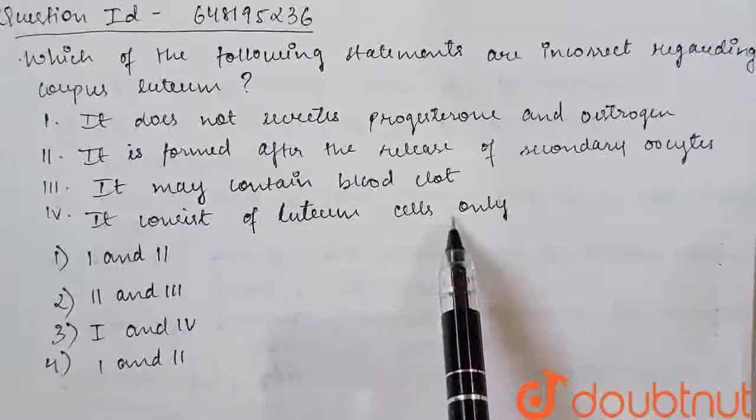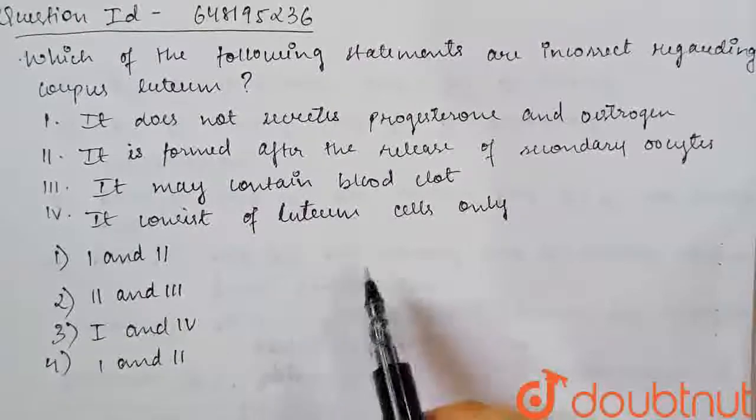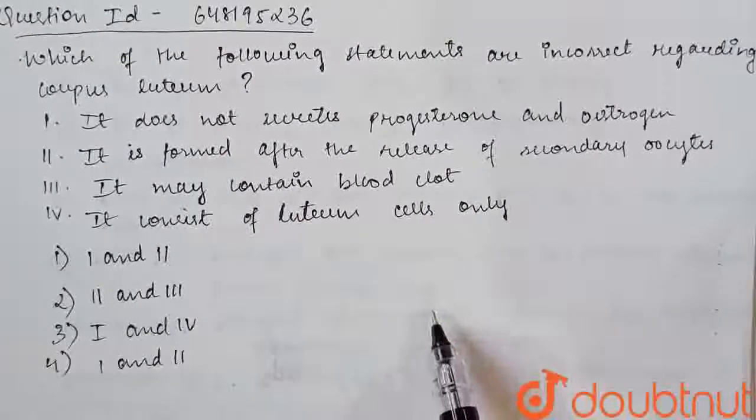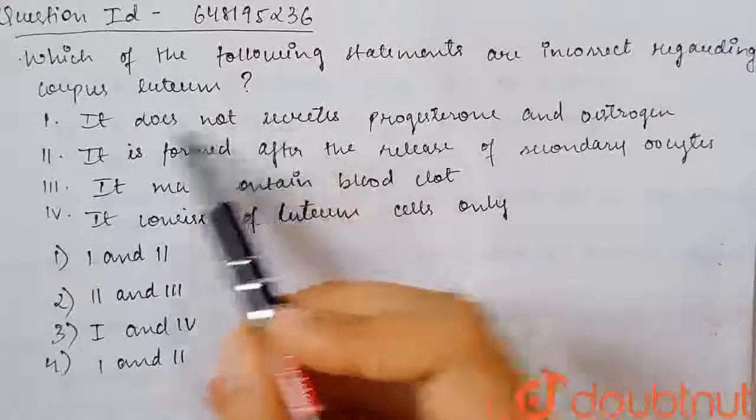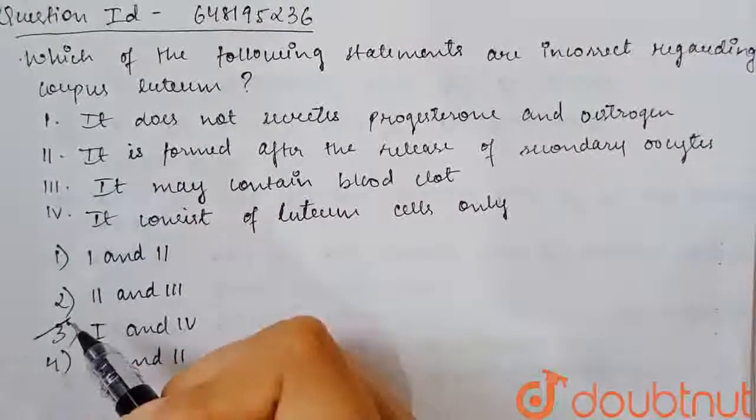It consists of luteum cells only? No, this is a wrong statement. Why? Because, yes, though it contains the luteum cell, it also contains some of the cells which are from the graafian follicle. So the wrong statements are 1 and 4. So the third option will be the correct option.